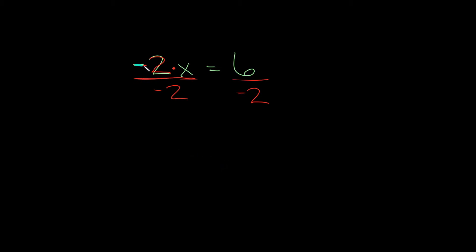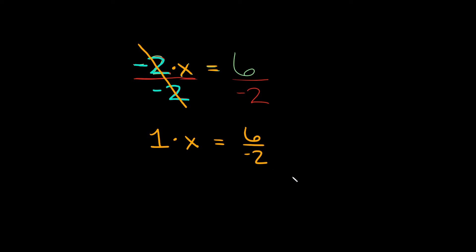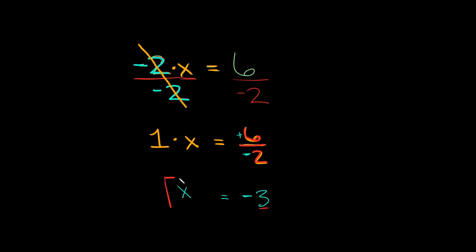On this side we have negative 2 on top and negative 2 on the bottom, so they simplify to 1, and we still have times x. This equals 6 over negative 2. So 1 times x simplifies to just x, and 6 over negative 2 is the same as 6 divided by negative 2. A positive divided by a negative is negative, and 6 divided by 2 is 3, so we get negative 3. We got x is equal to negative 3.